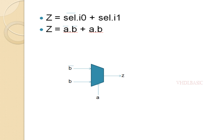When we replace these values in the boolean expression of the 2:1 MUX — Z equals Select-bar dot I0 plus Select dot I1 — substituting A for Select, B-bar for I0, and B for I1, we get Z equals A-bar dot B-bar plus A dot B, which is exactly the XNOR gate boolean expression.